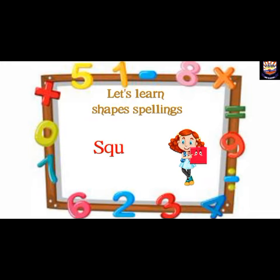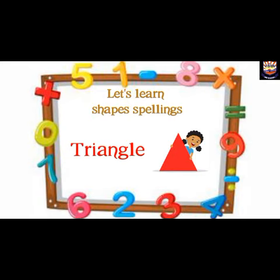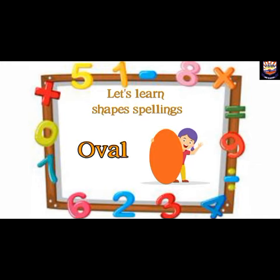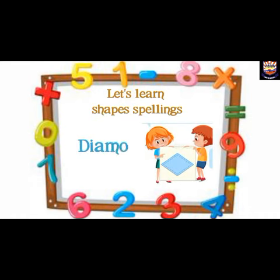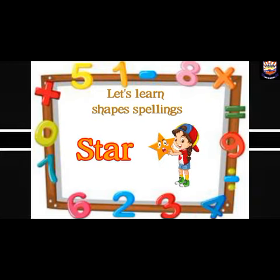Now kids, let's learn the spelling of each shape. Circle: C-I-R-C-L-E. Square: S-Q-U-A-R-E. Rectangle: R-E-C-T-A-N-G-L-E. Triangle: T-R-I-A-N-G-L-E. Hexagon: H-E-X-A-G-O-N. Oval: O-V-A-L. Diamond: D-I-A-M-O-N-D. Star: S-T-A-R.